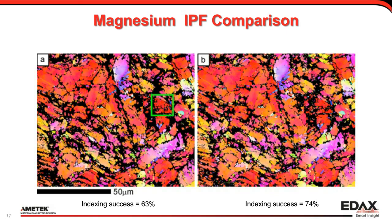Magnesium samples are notorious for giving very low quality patterns and maps even at the best polishing conditions — you usually don't get really great patterns like you do with steel or nickel transition metal samples. In this case, the raw data is only 63% indexing. NPAR increases that up to 74% — an increase of about 10% in quality. It still does not get you approaching 100%, but it makes it better and may help a little more with interpretation. NPAR isn't the be-all end-all, but it does help in getting better maps and better data for interpretation.